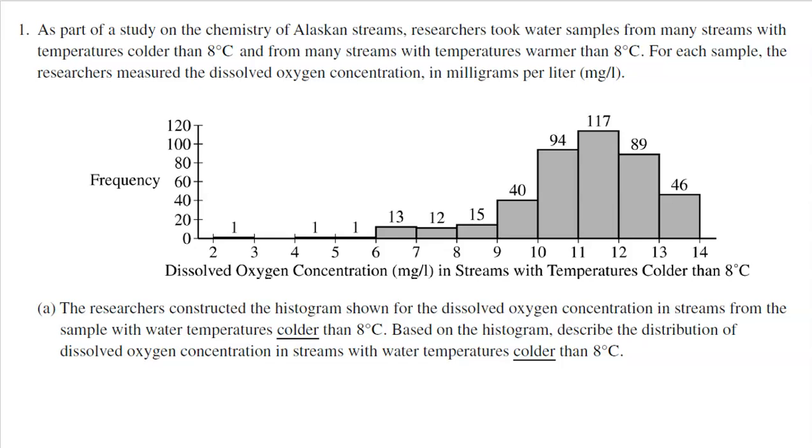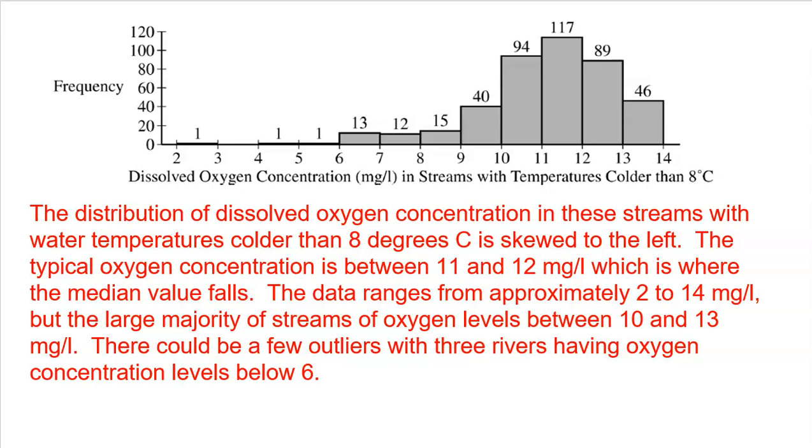We could also talk about outliers. It looks like there could possibly, not for sure without looking at more data, but possibly that one stream with two to three milligrams per liter would be an outlier. Maybe even the ones from four to five or five to six as well, possibly. And then finally, the spread, pretty wide, going all the way from as low as two to as high as 14. But the majority of the data, because we're skewed left, is really from 10 to 13.